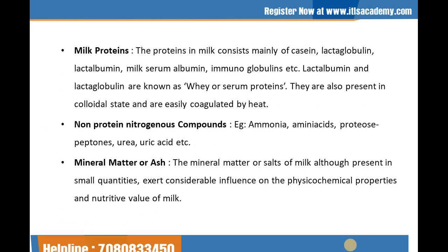The next topic is milk protein. The protein in milk consists mainly of casein, lactoglobulin, lactalbumin, milk serum albumin, and immunoglobulins. Caseins form more than 80% of the total protein of the milk. Casein exists only in milk and is found in the form of calcium caseinate phosphate complex. It is present in colloidal state. The next one is the non-protein nitrogenous compounds. Certain nitrogenous compounds are also present, for example ammonia, amino acids, proteases, urea, uric acid, etc.